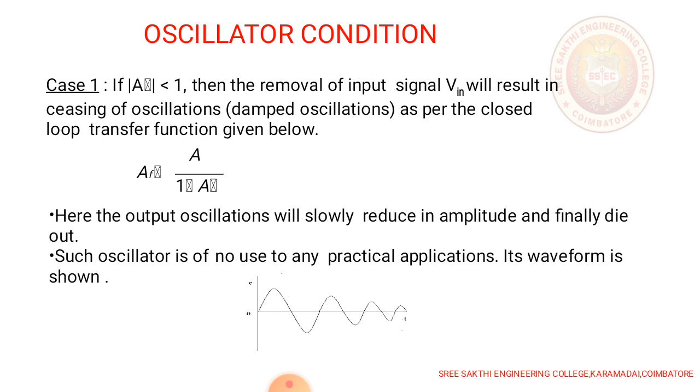That is, AF beta equals A divided by 1 plus A beta. Here the output oscillation will slowly reduce in amplitude and finally die out. Such oscillator is of no use to any practical applications. This waveform is shown here.